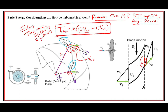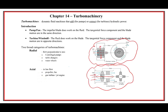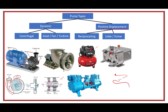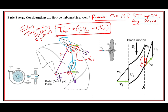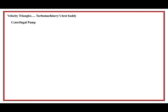In a centrifugal pump there are internal blades. There's a relative velocity tangential to those blades, and then there's an actual absolute velocity. The relative velocity plus the blade motion velocity gives the actual velocity, which also has components. The velocity triangles help to clear up this complexity.